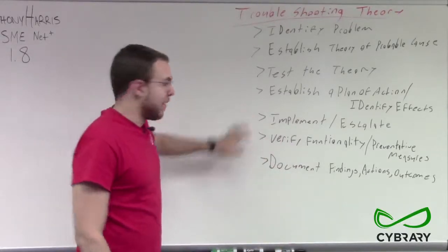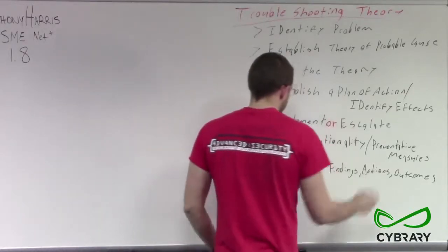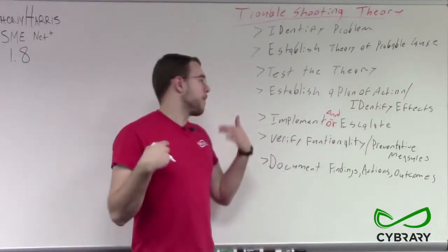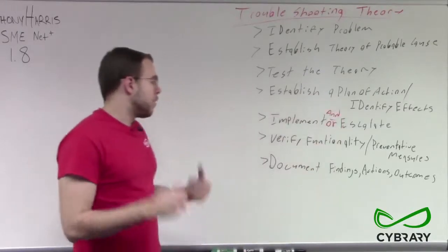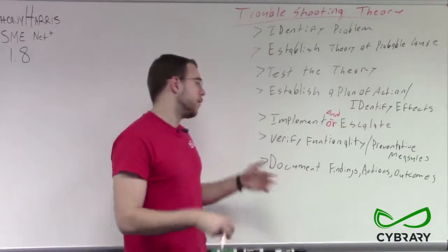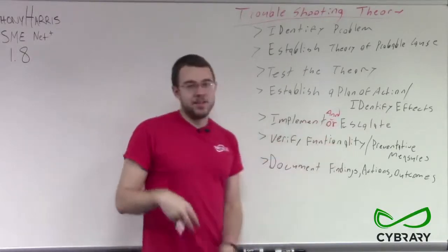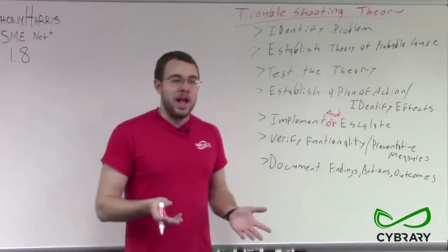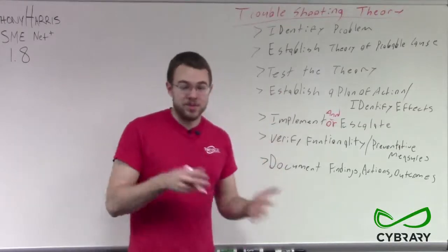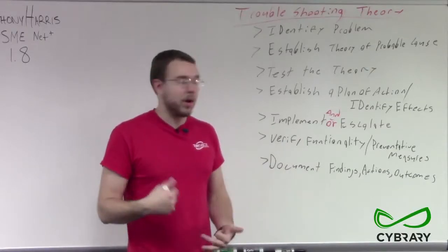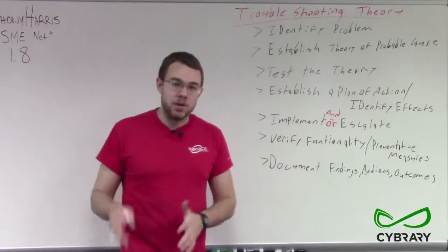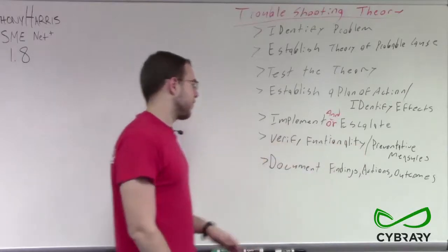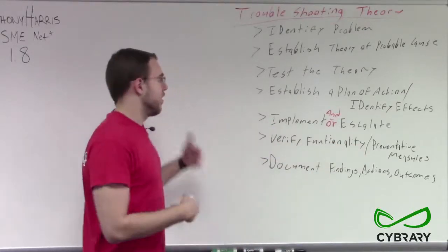Then we implement or escalate. When we implement or escalate, we are starting the process of implementing our plan of action. Maybe we have implemented our solution, but we can't perform all the necessary steps, so we have to escalate to the next level up. Maybe our department is responsible for the network and we've identified the computer and established a plan of action that this computer needs maintenance so it's not jabbering on the network. So we escalate it to a different department that handles individual computers and hardware. Or if we've gotten to the point where we can't figure out how to fix this, then we may want to escalate.